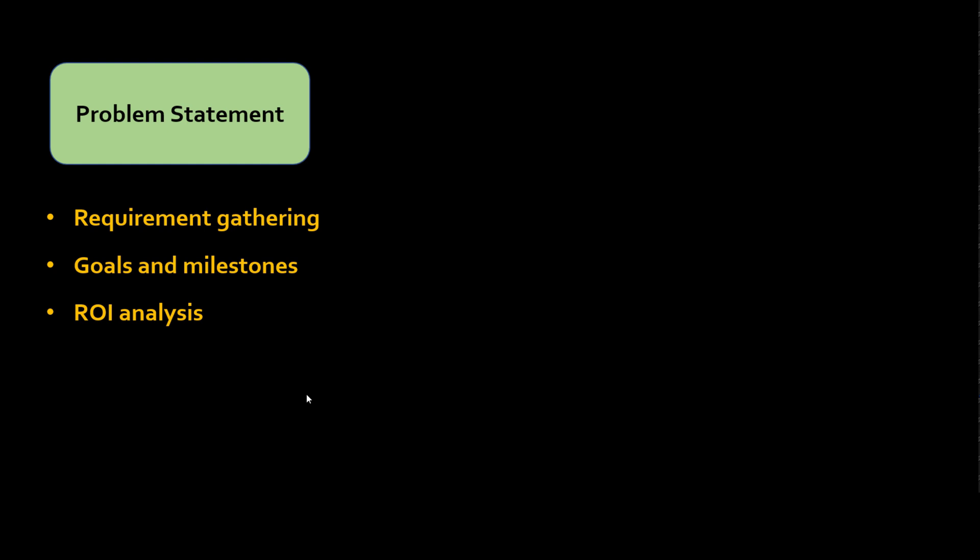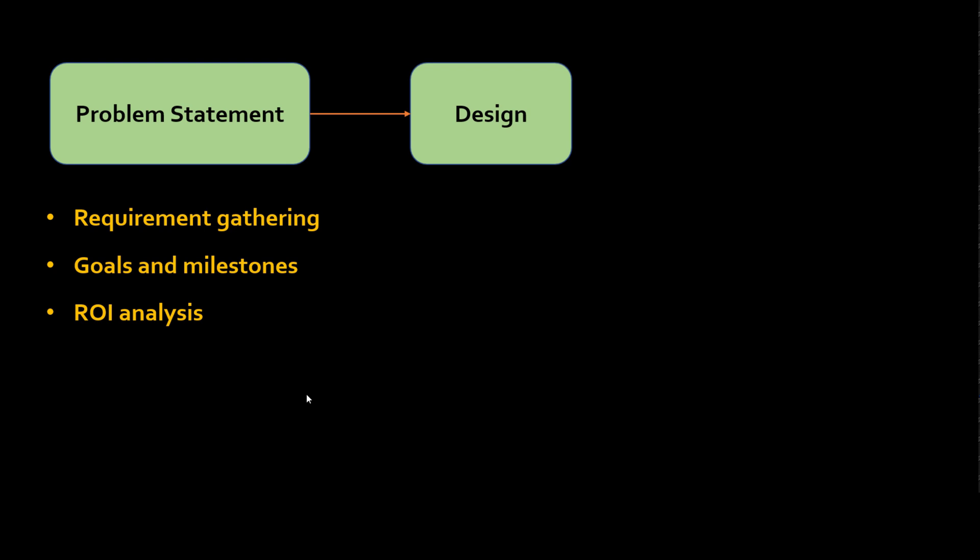Once the problem statement is clearly defined with goals, milestones, and ROI — Return on Investment — comes the design phase. The business manager will go to data scientists or machine learning engineers and talk about the problem. As a data scientist, your first responsibility is to figure out: is ML necessary for this project? Many times a problem can be solved using a rule-based system, simple software, or a regular expression.